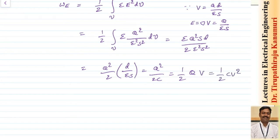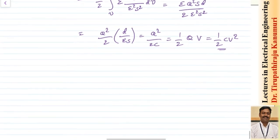By substituting q equals C·V into the energy expression, we get different but equivalent formulas for the energy stored, all yielding the same result: half C·V².